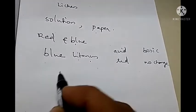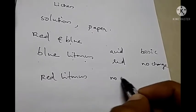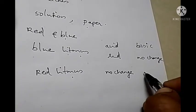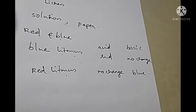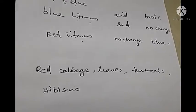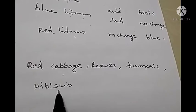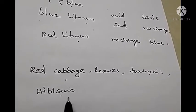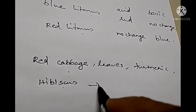When we dip the red litmus paper in acidic medium, there is no change. But when we dip red litmus paper in basic medium, it changes to blue color. So from these color changes, we can identify which one is acid and which one is base. There are some other substances like red cabbage leaves, turmeric powder, hibiscus flower, etc. that can also be used as indicators. These substances also give different colors in acidic and basic medium, so they too can be called as indicators.